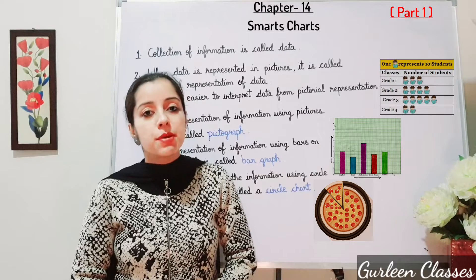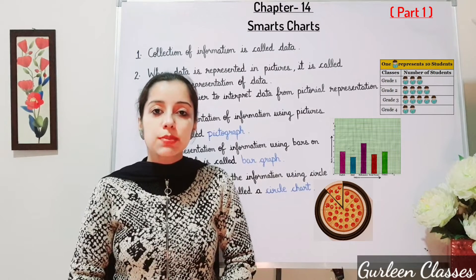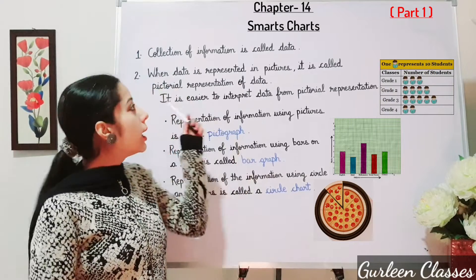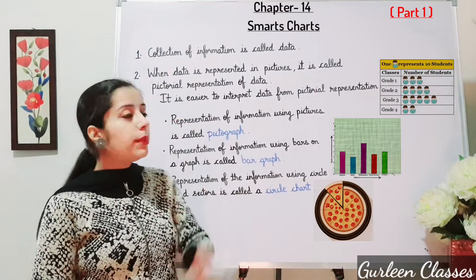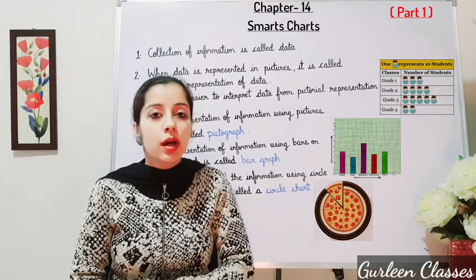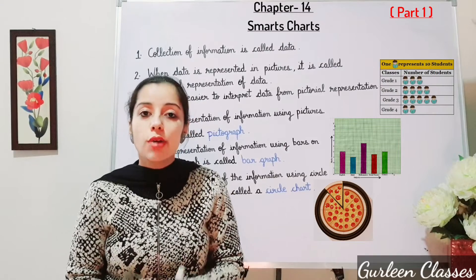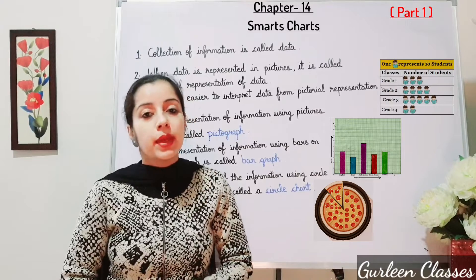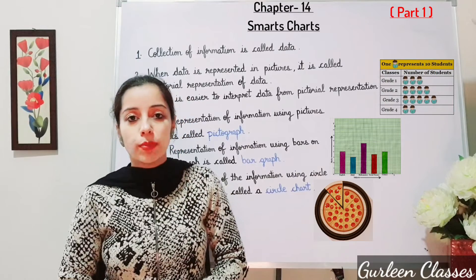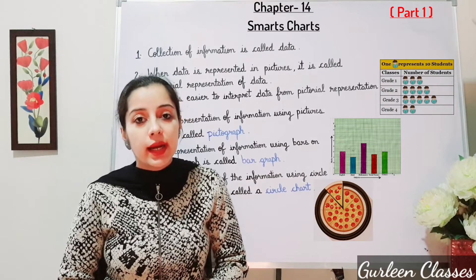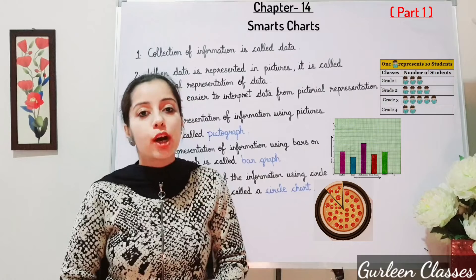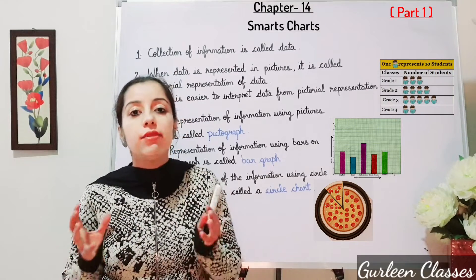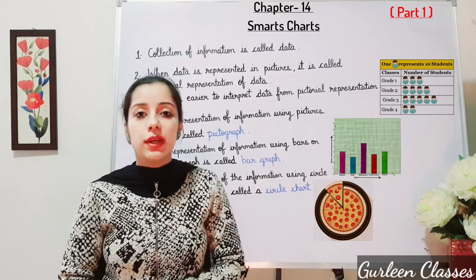Before moving to chapter number 14, Smart Charts, let us see a few terms. Number 1: collection of information is called data. For example, if we do a survey in the classroom and I ask you to collect the data — how many boys and girls are there — that is the data, the information which we have collected.